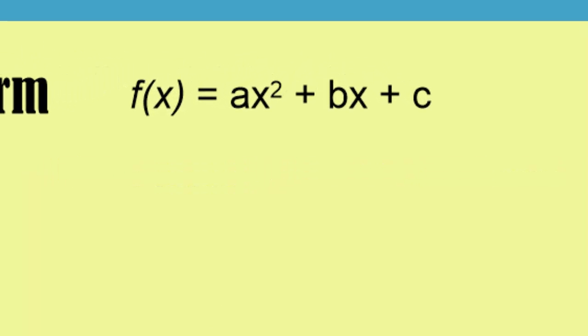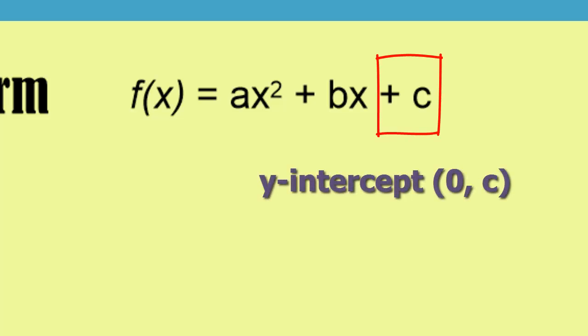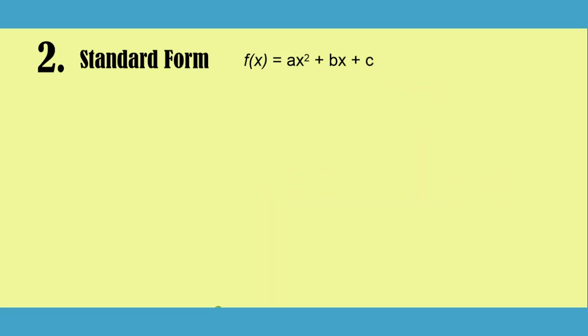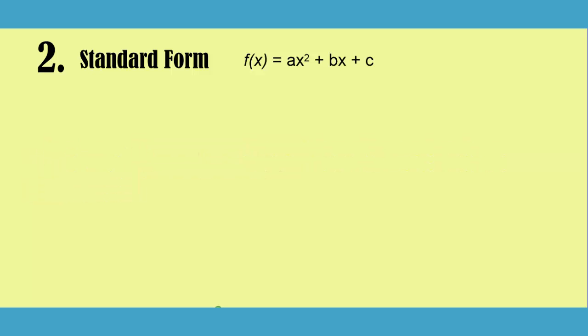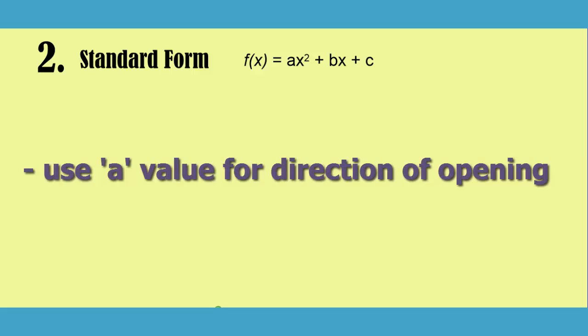An immediate use to standard form is by looking at the c value. The c value is the y-intercept on our parabola. Standard form is also useful when we need to solve for x, as we can plug the a, b, and c values into the quadratic formula. And just like vertex form before it, standard form can tell us the direction of opening by looking at whether the a value is positive or negative.